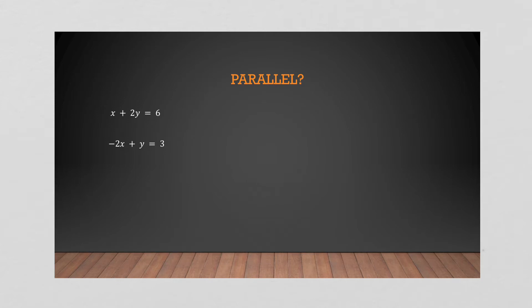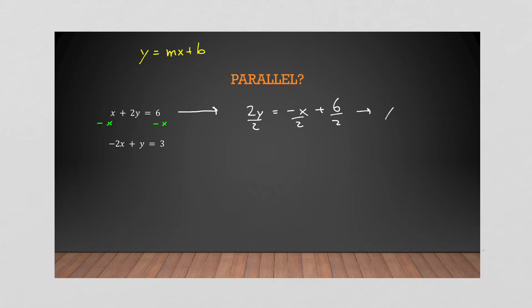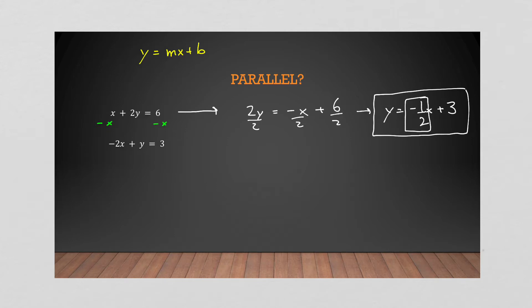How do we determine whether two lines are parallel without graphing? We convert their equations into slope-intercept form (y = mx + b) so the slope is visible. For the first equation, subtract x from both sides to get 2y = -x + 6, then divide everything by 2, giving y = -½x + 3. The slope is -½.